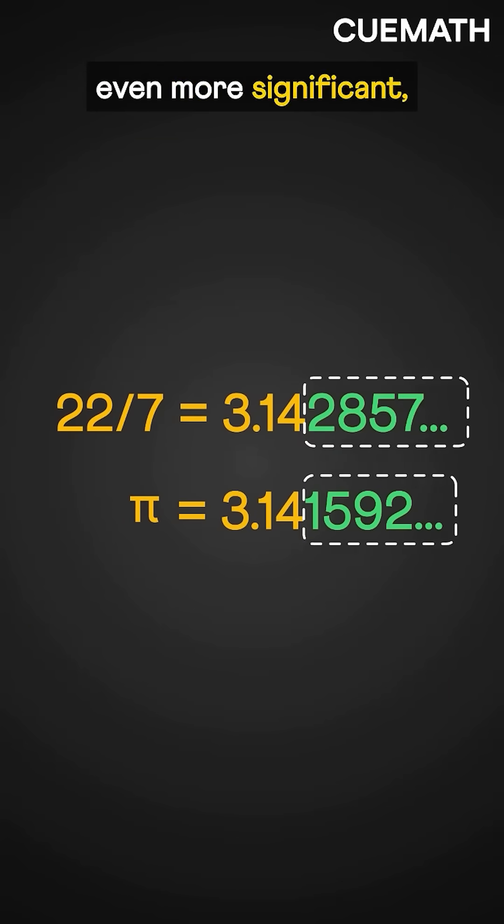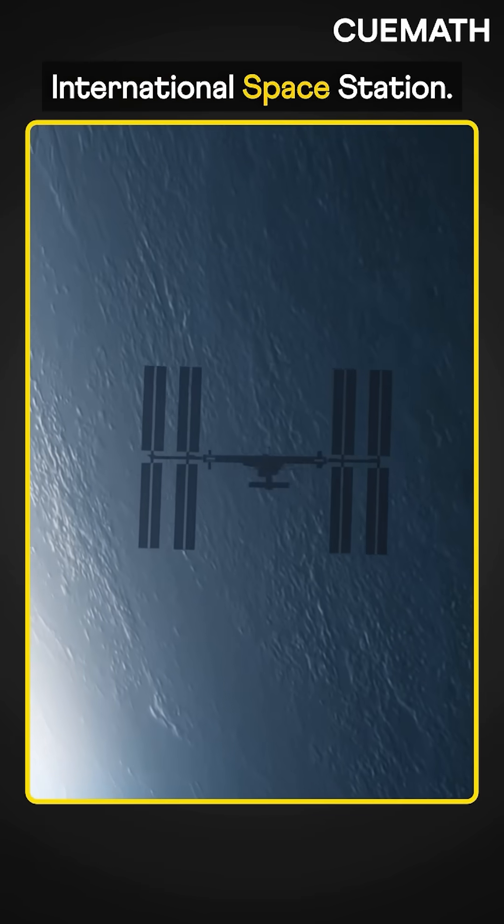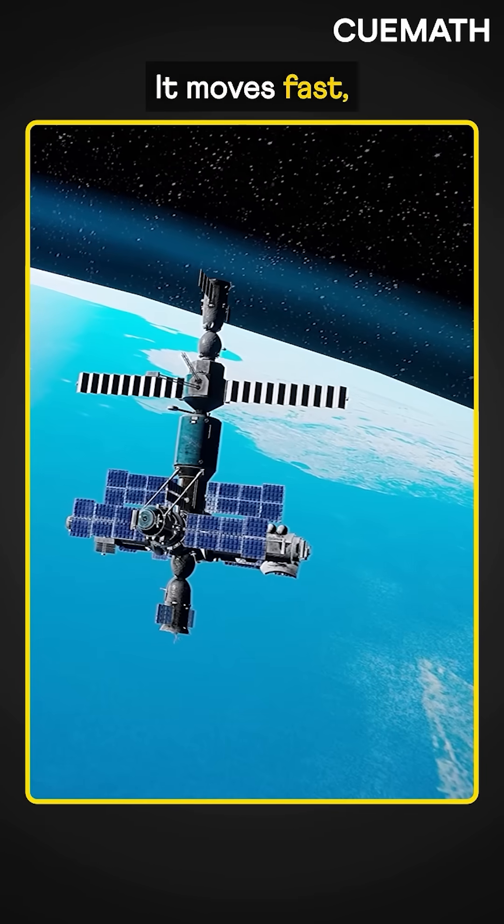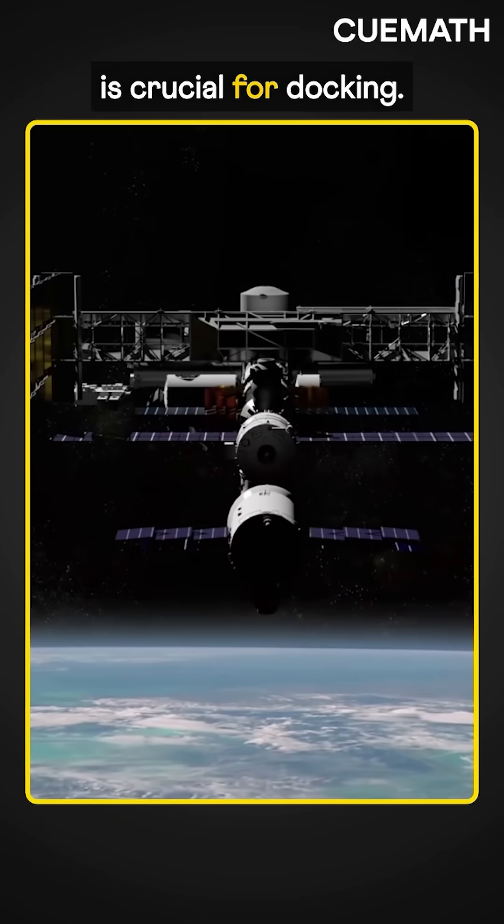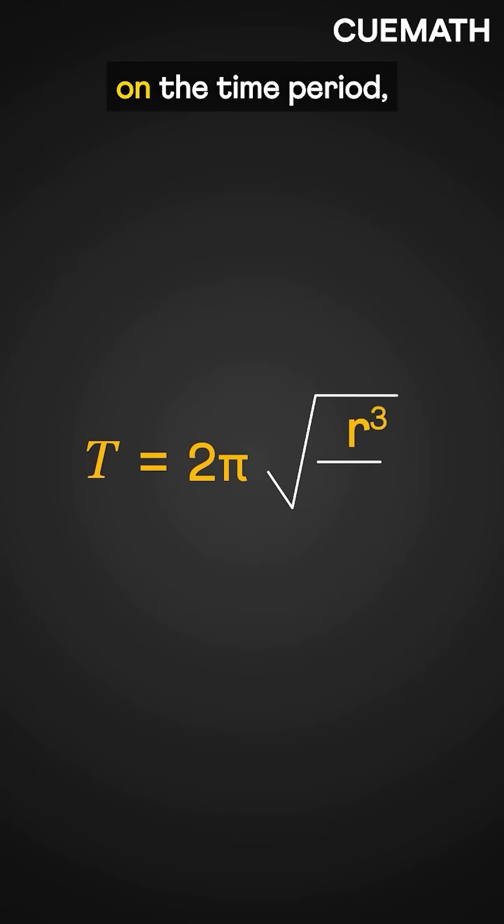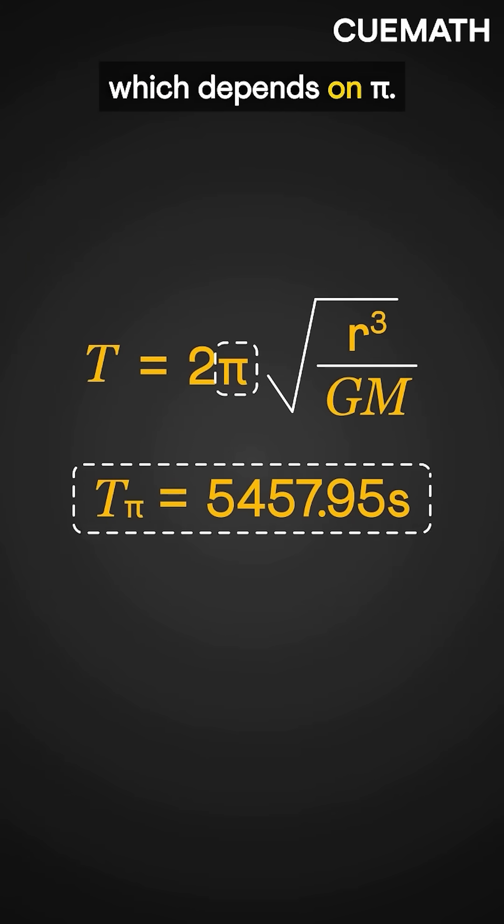The difference could be even more significant, like with the International Space Station. It moves fast, so precise positioning is crucial for docking. The position depends on the time period, which depends on pi.